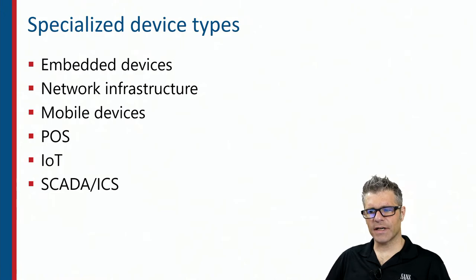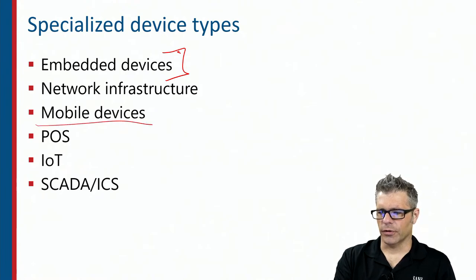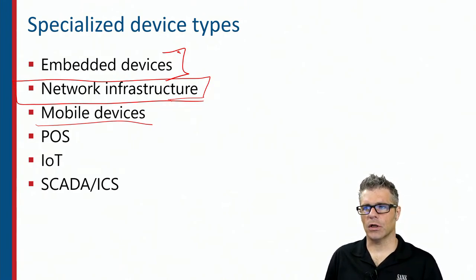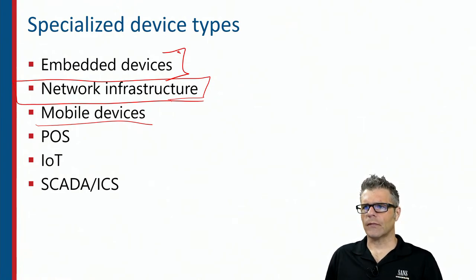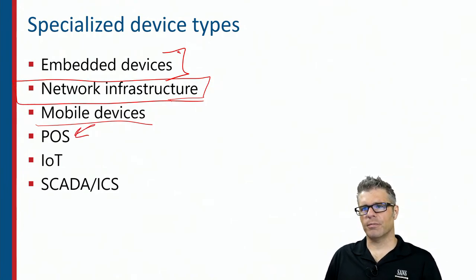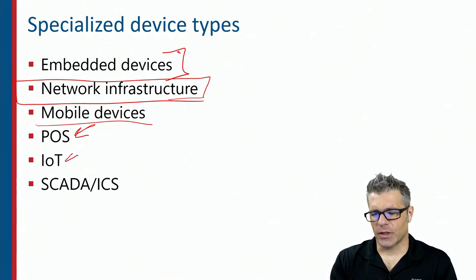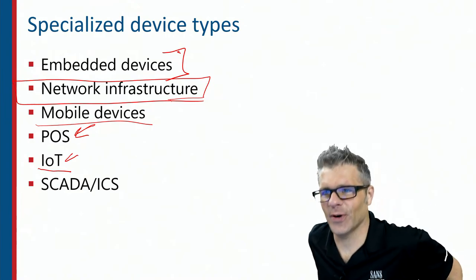In terms of specialized devices: there's embedded systems, mobile phones, and things that provide network infrastructure — switches, routers, firewalls, bridges, load balancers. Then there's point-of-sale systems, though the other meaning of the POS acronym is often equally applicable. And then there's the Internet of Things — I'll make the obligatory joke that the S in IoT stands for security, because there is no S in IoT.